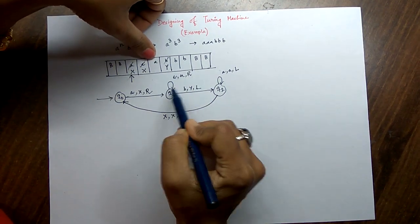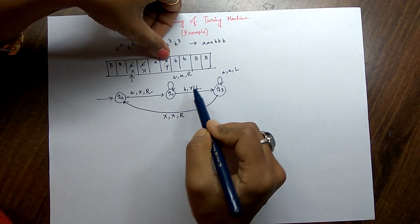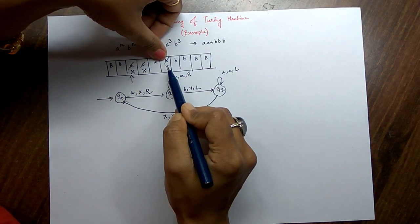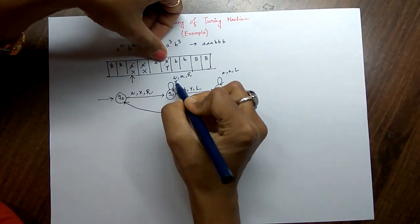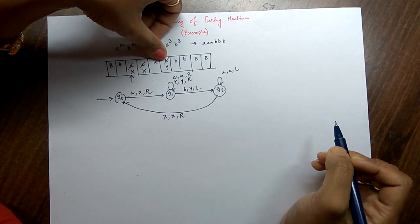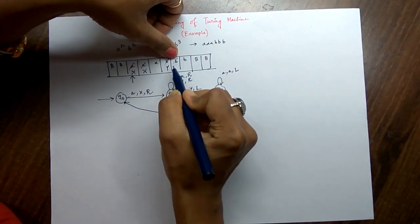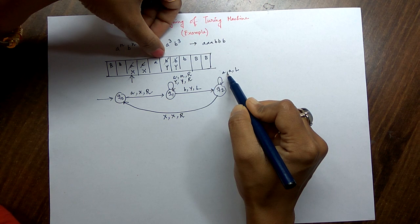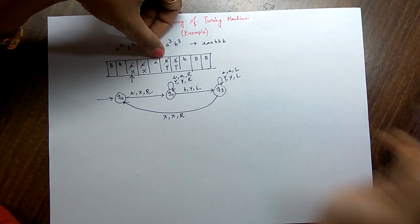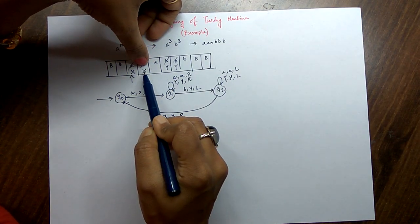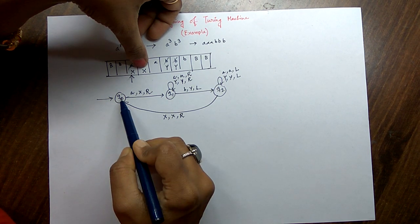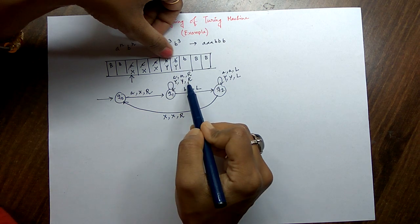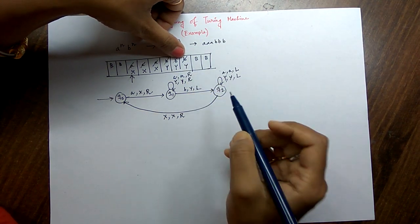Now going right again, it reads x and then the next a. It also reads y's, because in the first pass only a's were there but now b has been replaced with y, so we will have n number of y's. We read each y as it is and move right. Then we read the next b, convert it to y, and again go to the left direction. Earlier we were only reading a's; now we are also reading the y's on the way back.